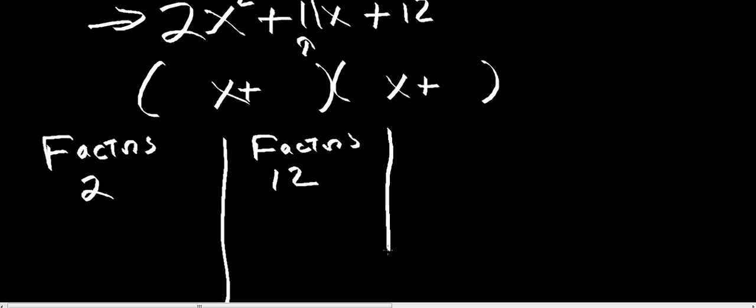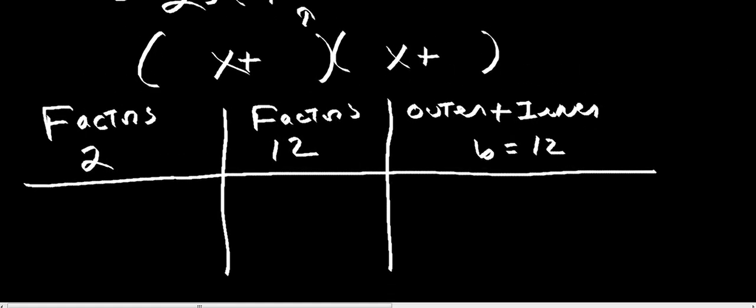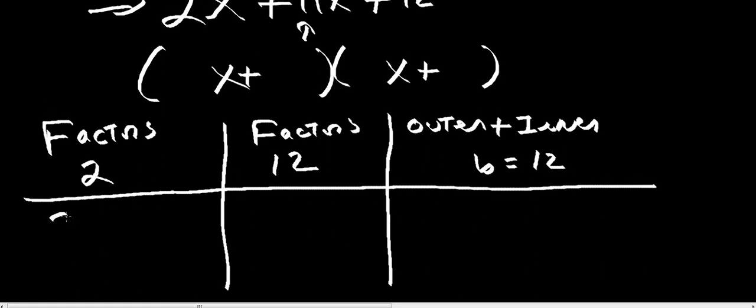Now this part is going to be kind of tricky. We want, so what we say, and we're going to say outer plus inner equals B, which in this case is 12. So let me, you're probably saying, what does he mean by outer and inner? Just as, when we fill out this table, I'll explain it.